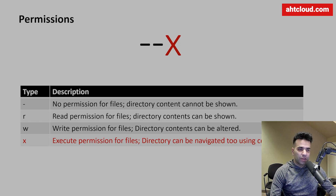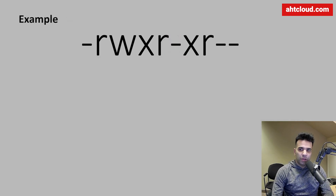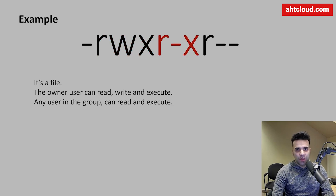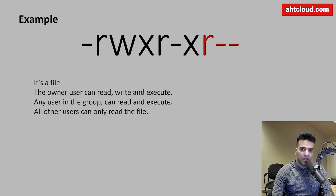Let's look at an example permission string. The first part tells us this is a regular file. The second part tells us the owner can read, write, and execute. The third part tells us group members can only read and execute — there is no 'w'. The last part tells us all other users can only read — they only have the 'r' permission.